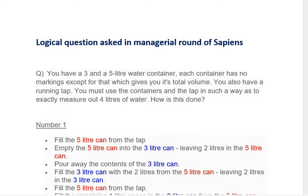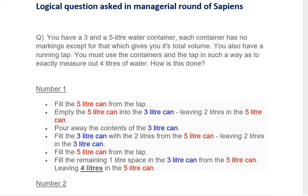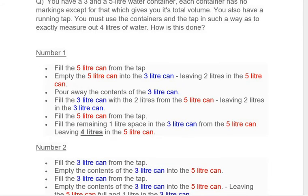Now there are two liters in the three-liter can. Fill the five-liter can from the tap, then fill the remaining one-liter space in the three-liter can from the five-liter can. In this way, you will get four liters in the five-liter can. This is the first approach.